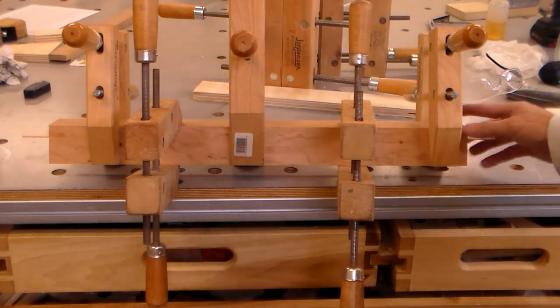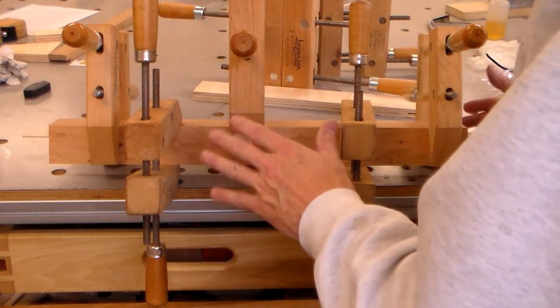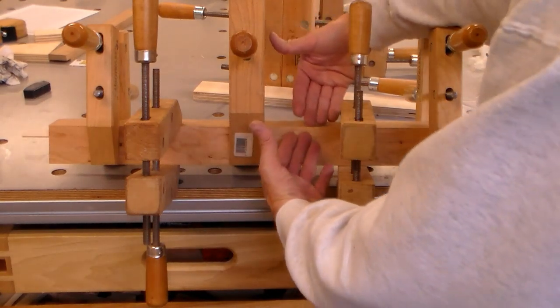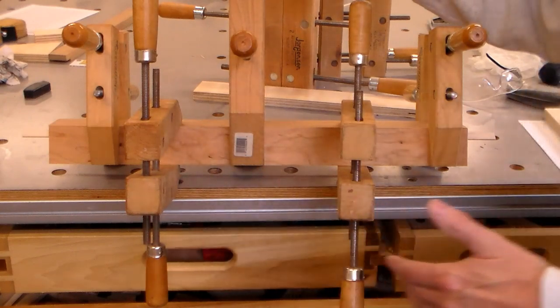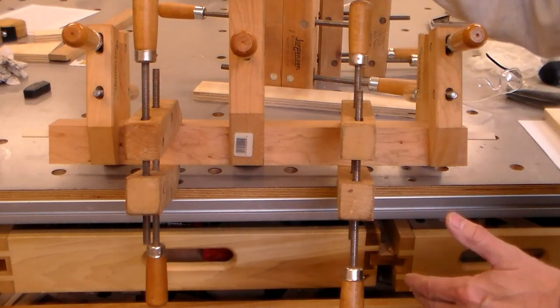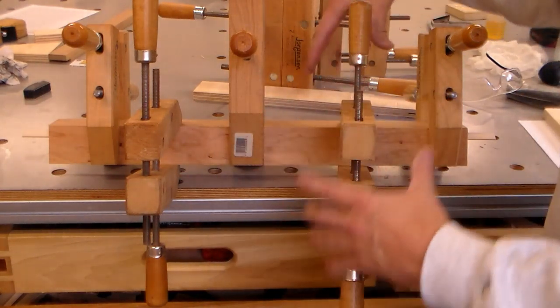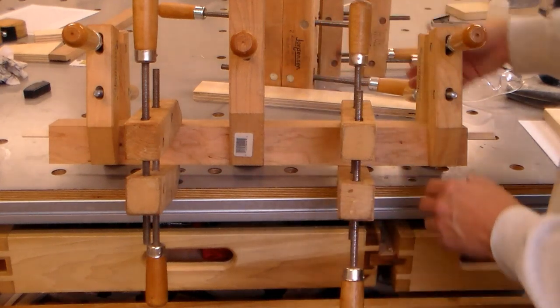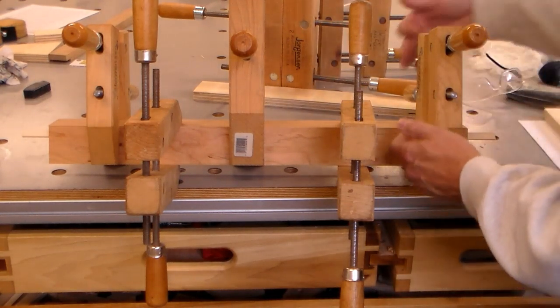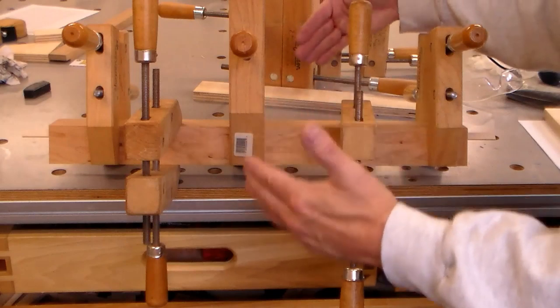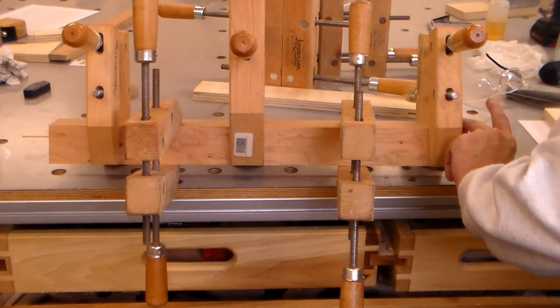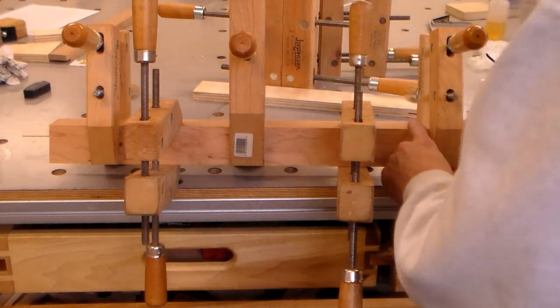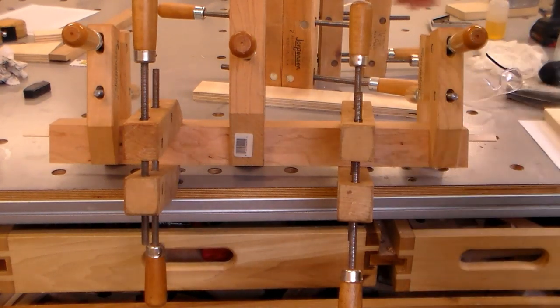I'm ready to glue them up. This is just a dry glue up but this is the strategy I'm using here. Remember these are 40 degrees and so it's close enough to 90 degrees that these Jorgensen clamps, you know, you can get the right angle on the jaws and I can put pressure in both directions and because of the spline it's not sliding on me and I can pull it together pretty good here. So I'm pleased with the way this is going to work.